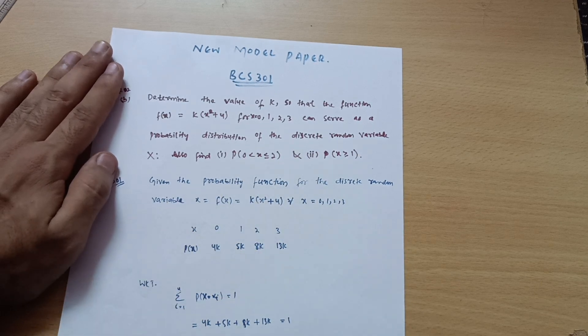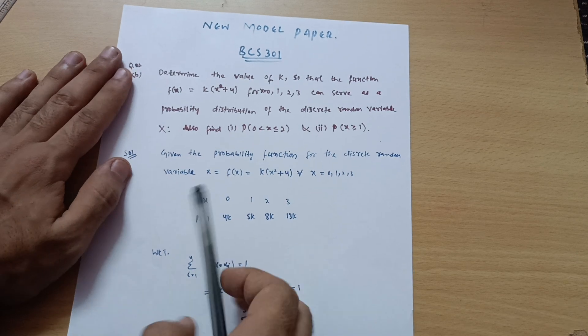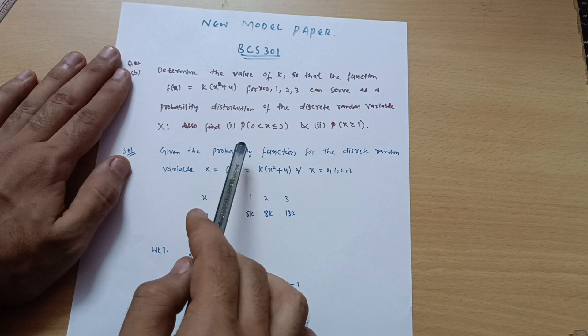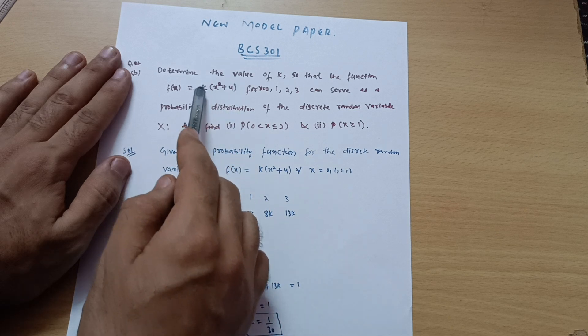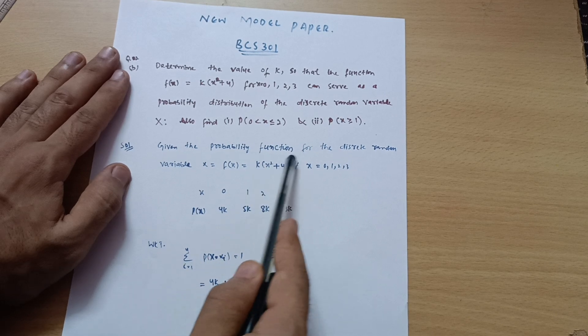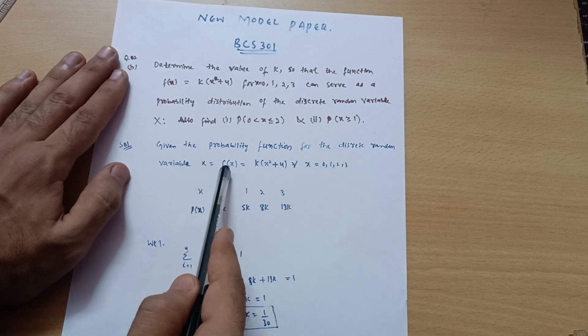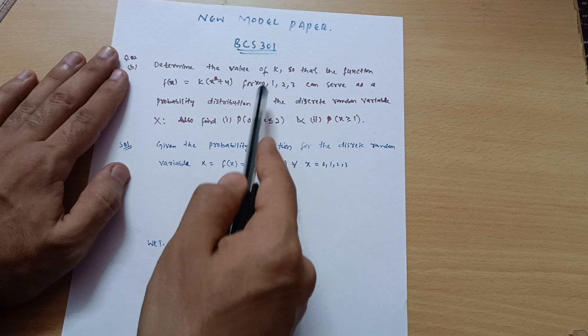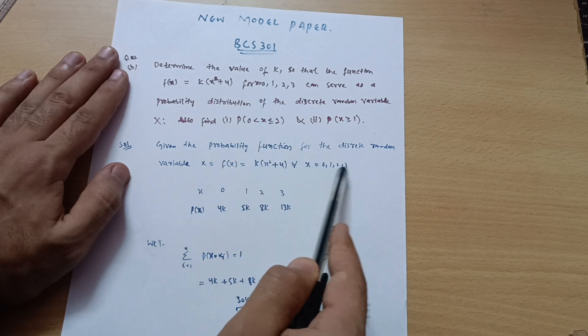This is a similar question to what we have done in previous videos. First, since no probability distribution table is given in this form, you have to form the distribution table from this equation. Given the probability function for the discrete random variable x is f(x) = k(x² + 4) for all x = 0, 1, 2, 3.